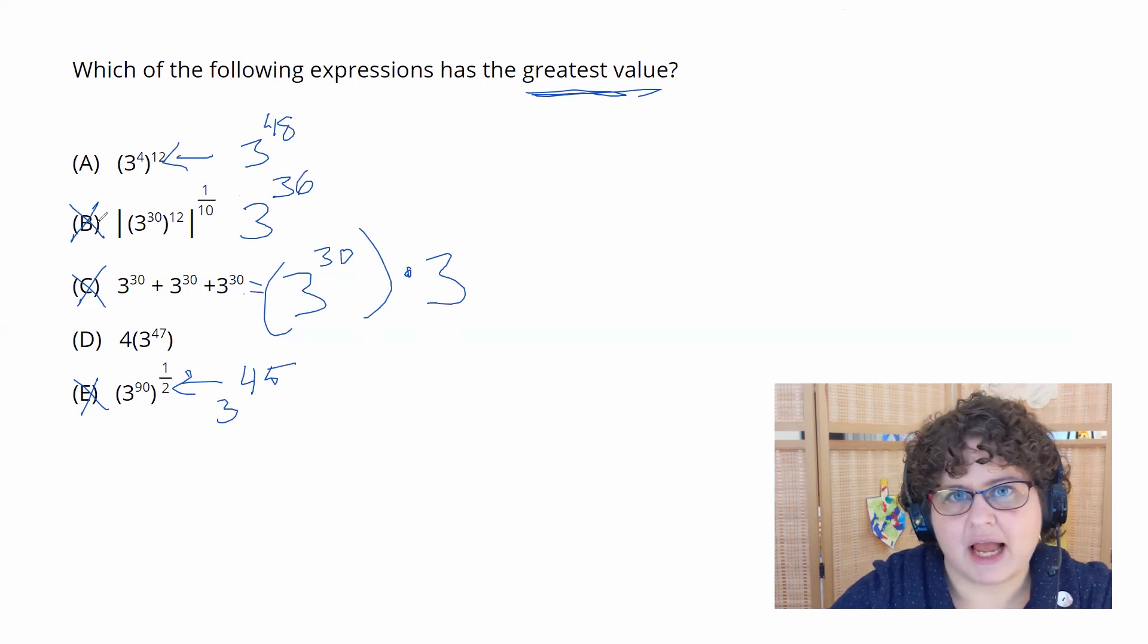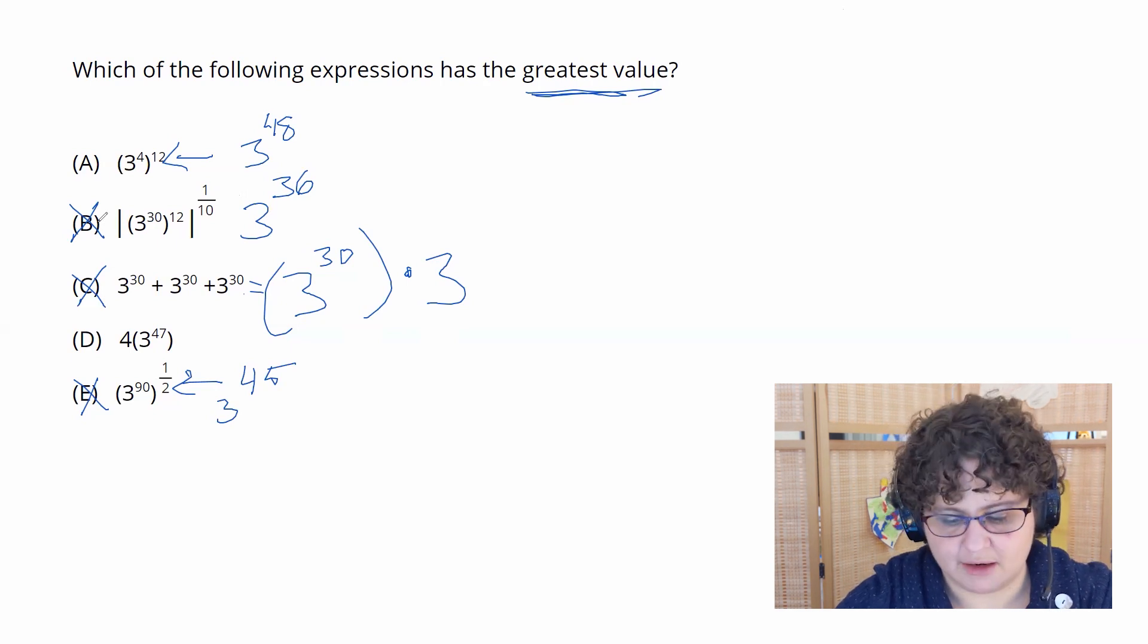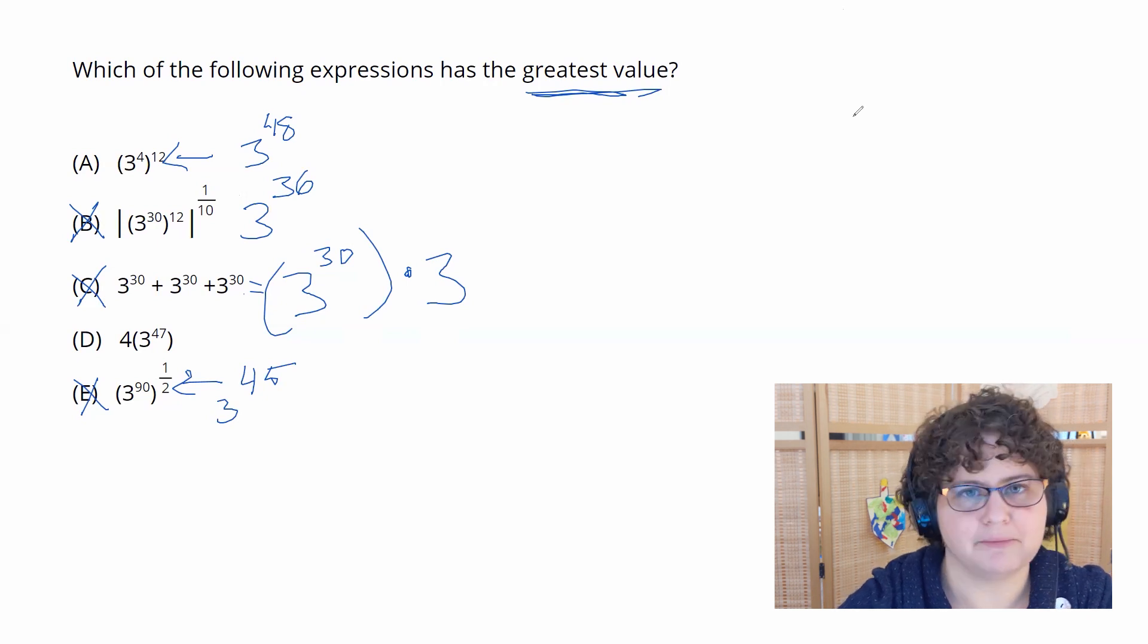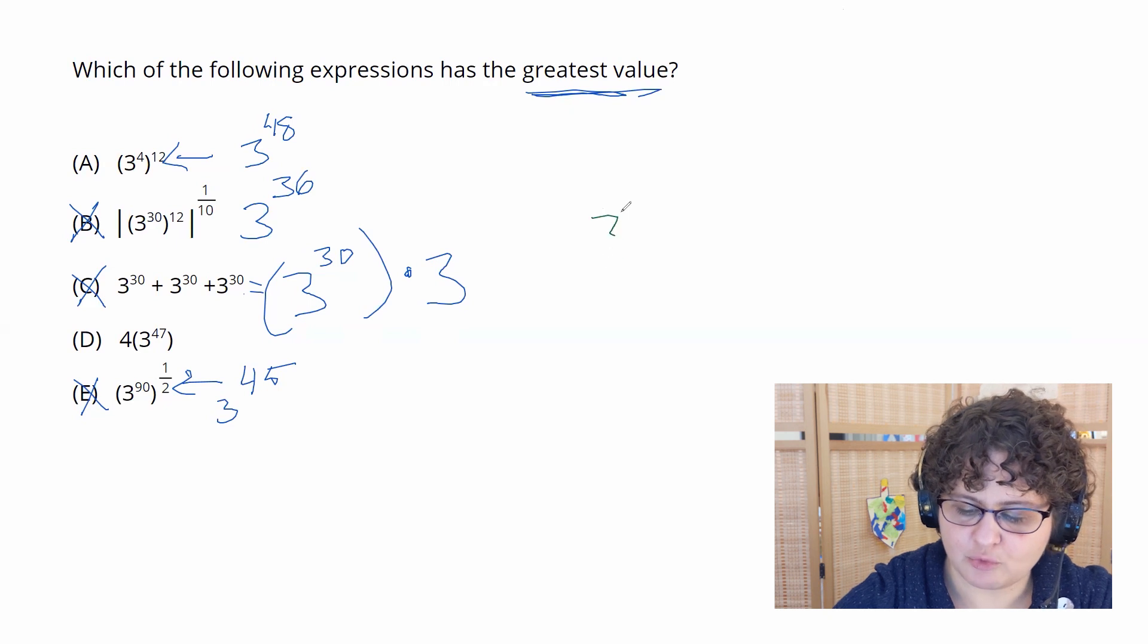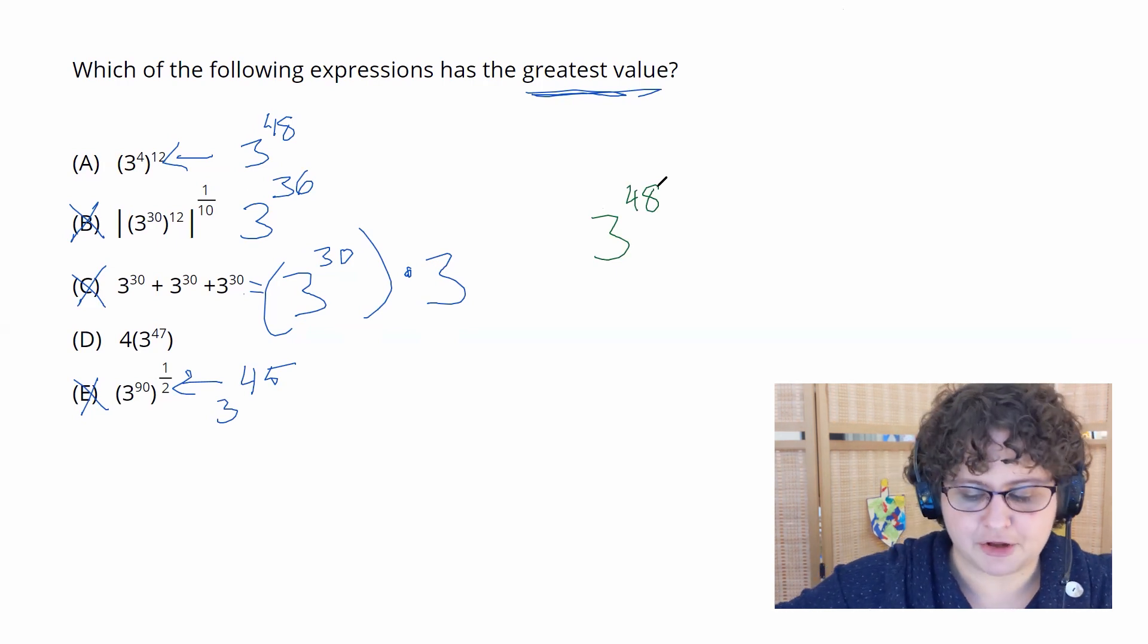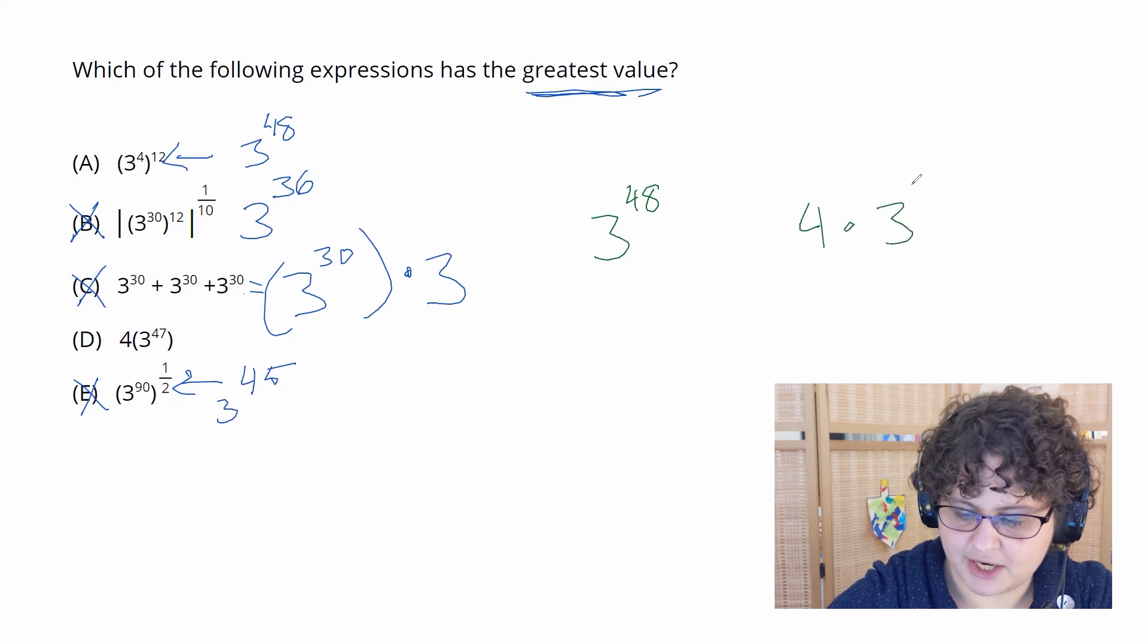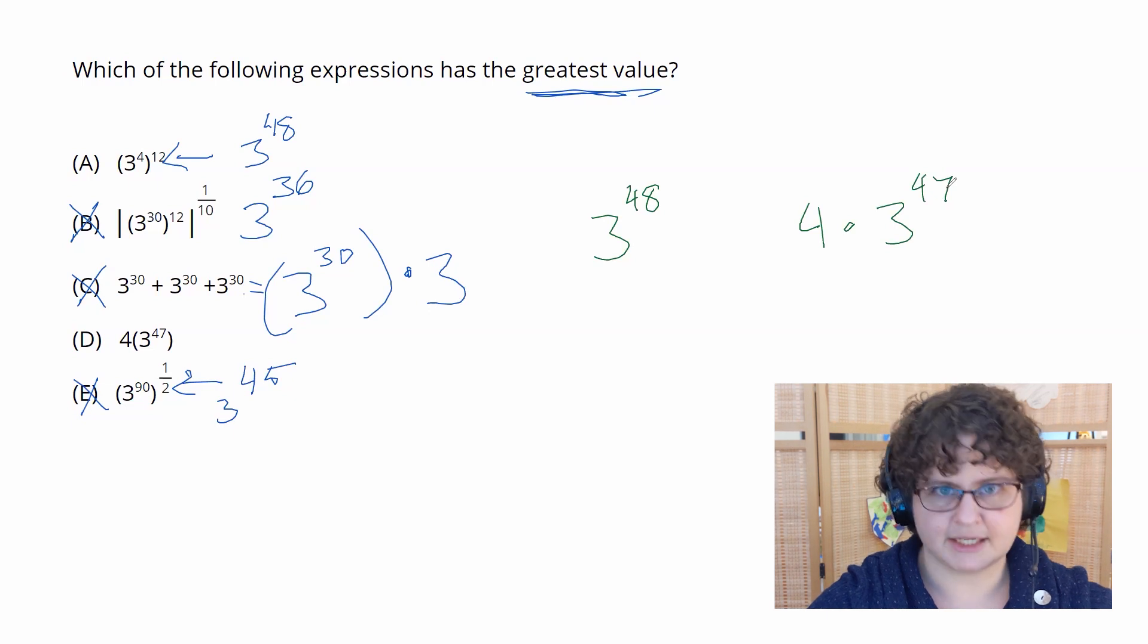Now we have our absolute last one, the only one that involves a term that's not a 3, and this is where things can get a little bit tricky and you've got to be completely confident with what exponents mean. So 3 to the 48th literally means I have 48 threes lined up together multiplied by one another. 4 times 3 to the 47 means I have 47 threes lined up multiplied by one another, but then also multiplied by a 4.